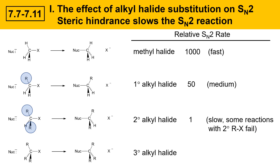Finally, there are tertiary alkyl halides. Tertiary alkyl halides have three carbon groups attached to the carbon bearing the halogen. These have a pretty extreme amount of steric hindrance, and in these cases the reaction essentially doesn't work at all — there's no reaction, zero reaction rate. Tertiary alkyl halides are just too hindered; the nucleophile is not able to get past all of this bulk to reach the carbon.